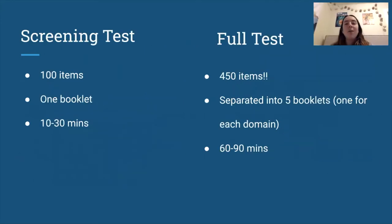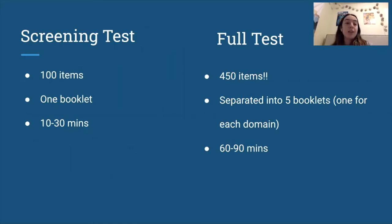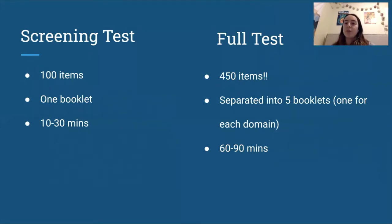This test takes 60 to 90 minutes to administer, so there is an alternative: the screening test. The screening test includes 100 items versus 450 items and only takes 10 to 30 minutes to administer. The screening test has its own separate booklet — you only need the one — while the full test is separated into five booklets, one for each domain.